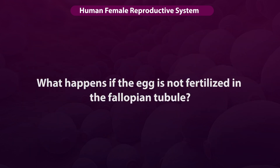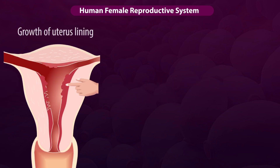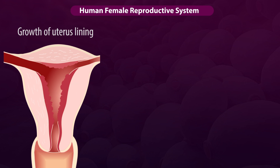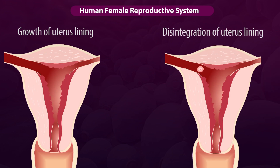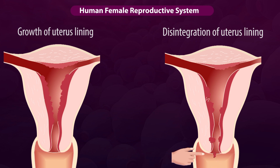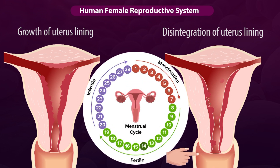What happens if the egg is not fertilized in the fallopian tubule? Every month, the walls of the uterus are lined by blood vessels and tissues in anticipation of an embryo. If the egg is not fertilized and the embryo is not formed, then the unfertilized egg lives for one day. After that, the egg gets dissolved and the tissues formed on the lining of the uterus along with the blood slowly break and expel out through the vagina. The loss of blood and mucus from the vagina lasts for 2 to 8 days. This process is called menstruation.